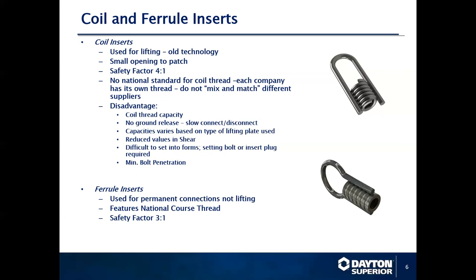Ferrule inserts are typically used for permanent connections only — they are not designed for lifting products, primarily because NC threaded bolts have such a low shear tolerance within the bolt itself. There are so many threads that they are fairly thin and don't have a lot of capacity for lifting. The typical safety factor is 3-to-1 for coils.